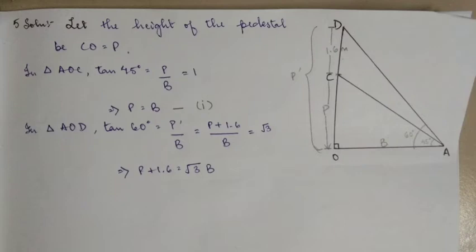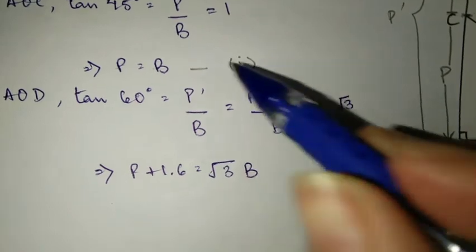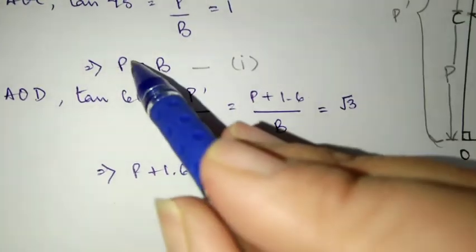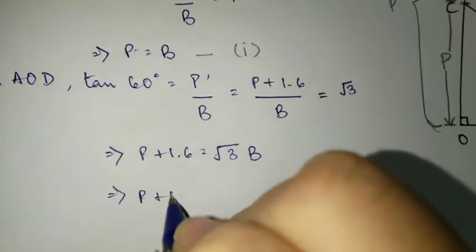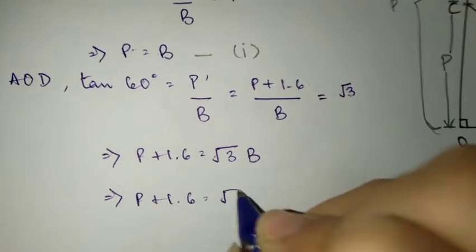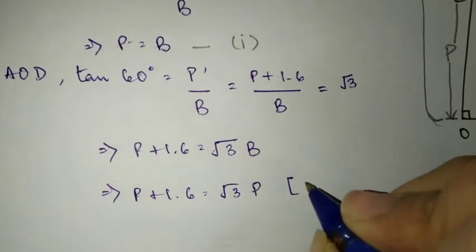Now we know P dash is equal to P plus 1.6, right. And B remains the same, this is equal to root 3. Now P is, if you cross multiply, P plus 1.6 is equal to root 3B.